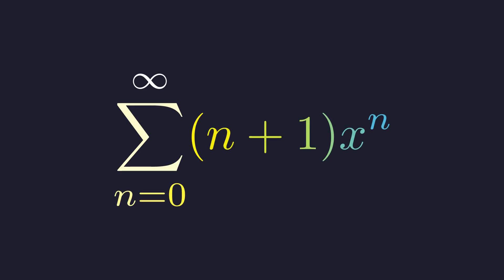Welcome back to Mental Math. Today we have a fascinating infinite series. It looks complex, but we're going to reveal its surprisingly simple and elegant form. Our problem is to find the value of the sum from n equals 0 to infinity of the quantity n plus 1 times x to the power of n.